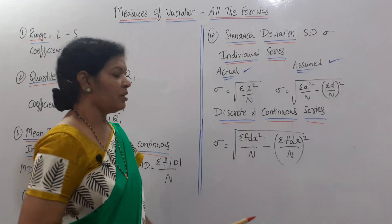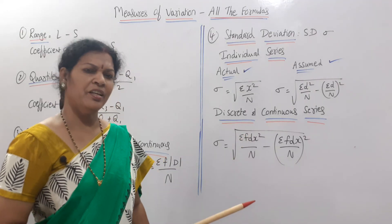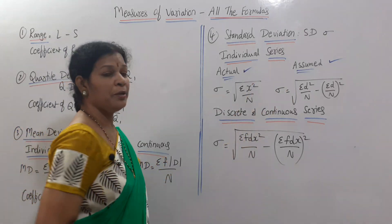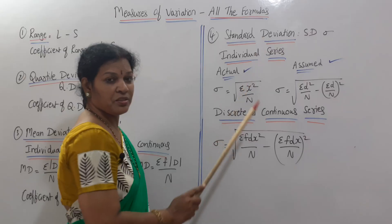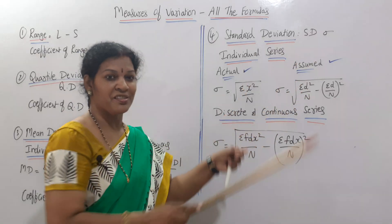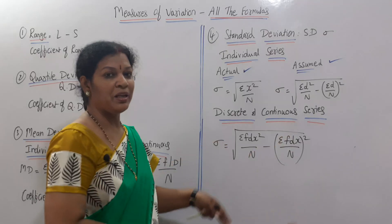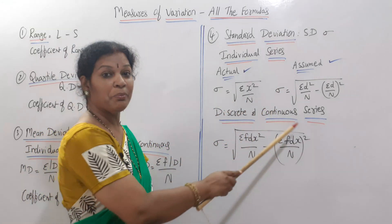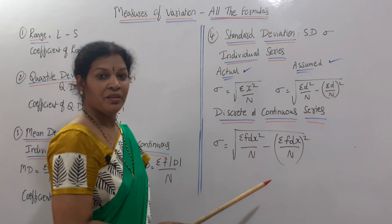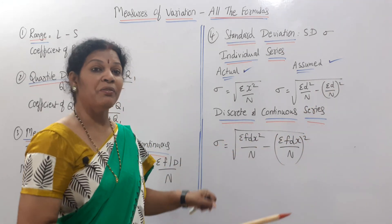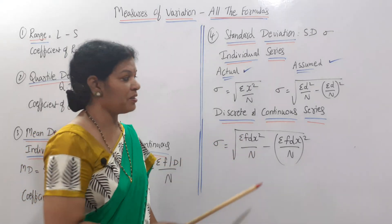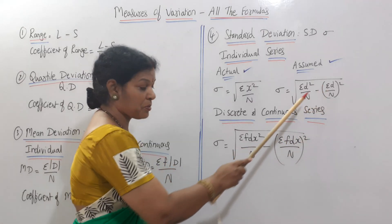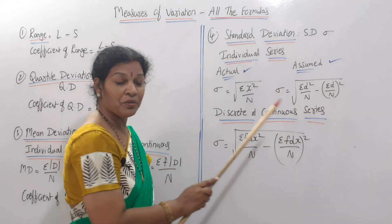For discrete and continuous series, always go for the assumed mean method. The formula is: rho equals root of sigma FD X square by N minus sigma FD X by N whole square. In the individual series formula we write sigma D square, but here we write sigma FD X square because deviations are taken from the mid value and frequency is involved — otherwise the structure is almost similar.